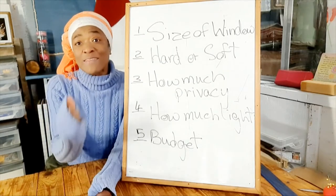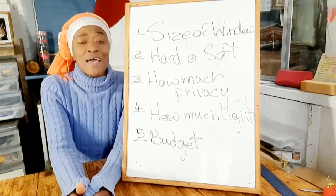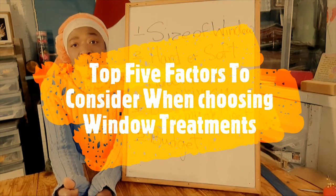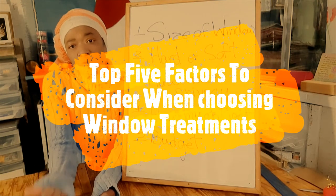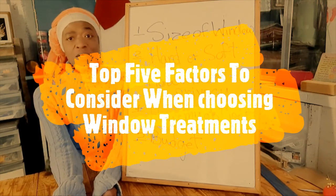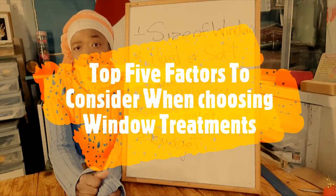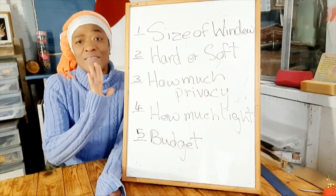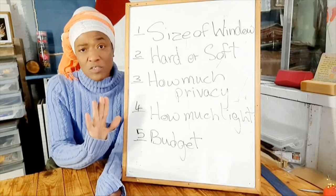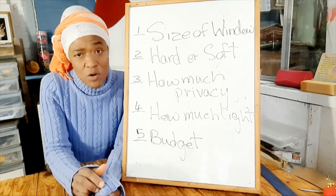In this lesson, I want to look at five things that should influence your decision when you're trying to decide on a window treatment. There are other factors that will influence your decision, but I think these are the five top factors that you should consider when choosing your window treatment.